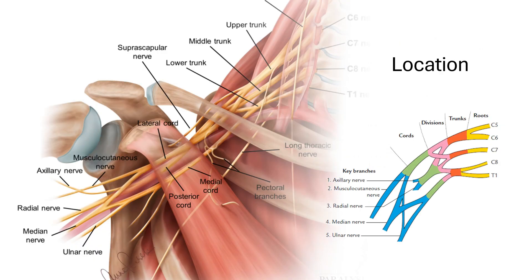Now let's see where the brachial plexus is located. The brachial plexus has four components: roots, trunks, divisions and cords. Each of these components is located in a different location. The roots lie in the neck, deep to the scalenus anterior muscle. The trunks also lie in the neck, between the scalenus anterior and scalenus medius muscle. The divisions lie behind the clavicle, and the cords are seen in the axilla region.